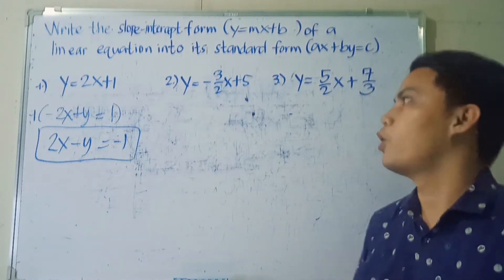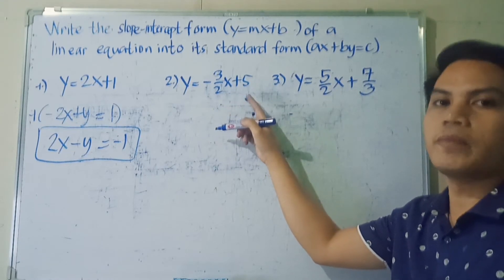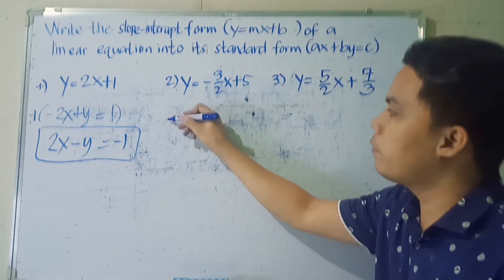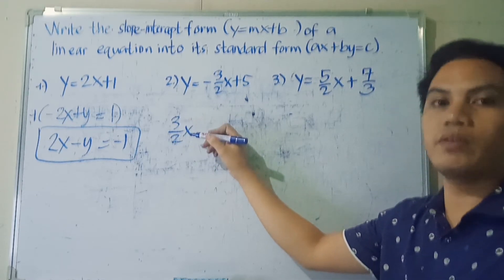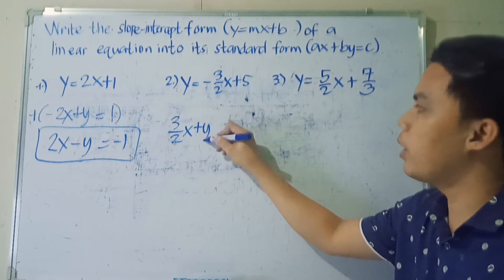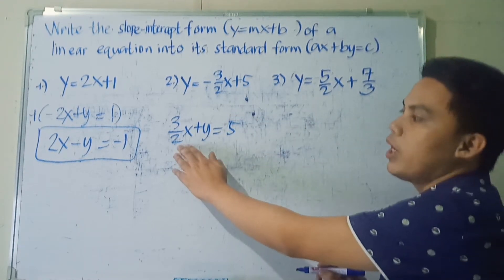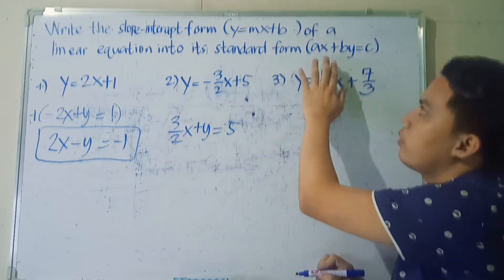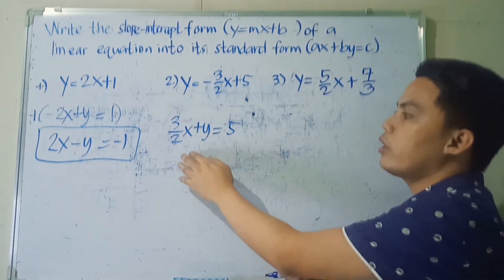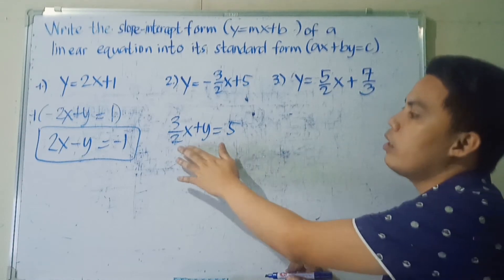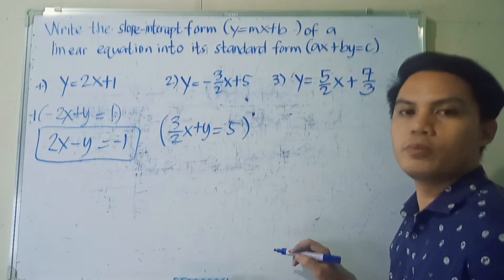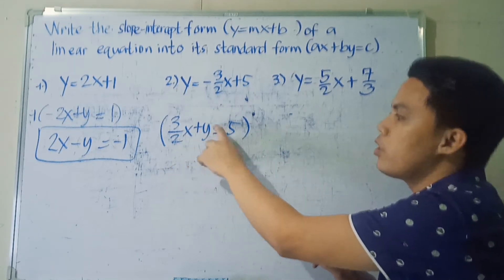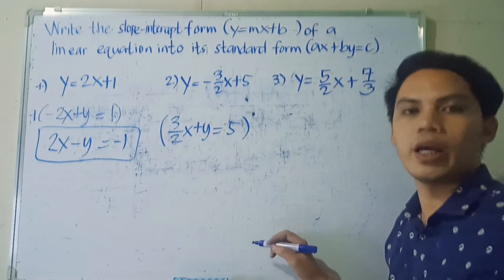Example number 2: Y is equal to negative 3 halves X plus 5. We need to move negative 3/2 X to the left side, so it becomes positive 3/2 X. Bring down Y, giving us 3/2 X plus Y is equal to 5. The coefficient of X is now positive, however it is still a fraction. We need to convert it to a whole number by eliminating the fraction.